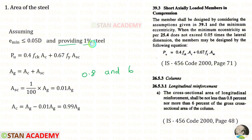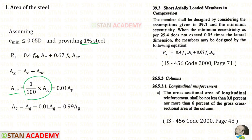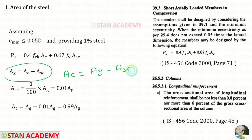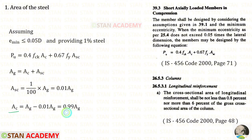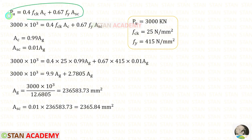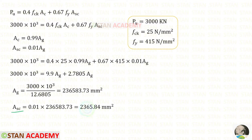So the area of the steel should be between 0.8% and 6%. Let us provide 1% of steel. We know that the gross area AG equals the area of concrete AC plus the area of steel ASC. Since ASC is 1%, ASC equals 0.01 AG, and AC equals AG minus 0.01 AG, giving 0.99 AG. Applying all values in the formula, we get the gross area AG, and since ASC equals 0.01 AG, we get ASC equal to 2365.84 millimeter square.